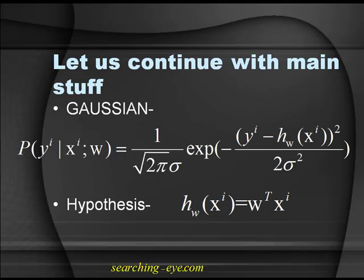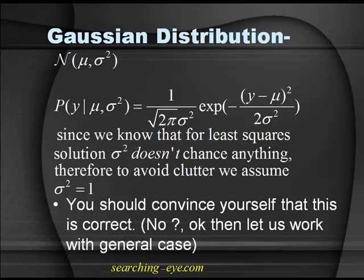Let's continue with the main stuff. The distribution is p(y | η), which is p(y | x_i) over two sigma squared, where our learning hypothesis was w^T x_i. The general Gaussian distribution p(y | μ, σ²) is one over root(2π σ²) times exponential of (y − μ)² over 2σ².